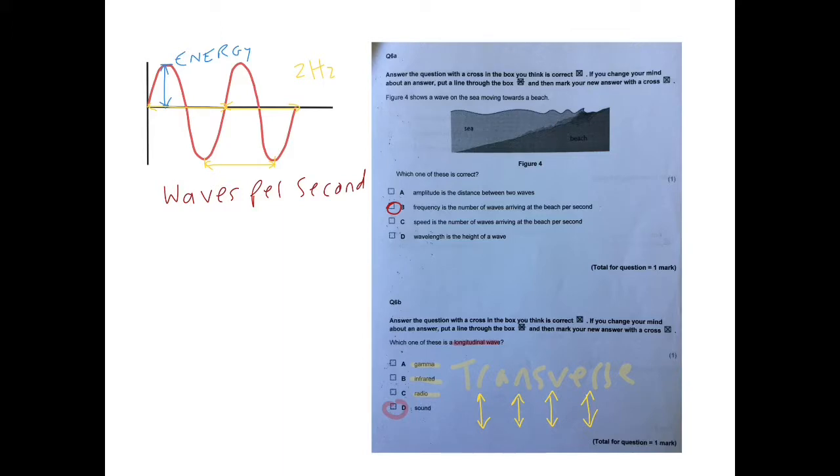What it means by transverse is as the energy travels forward, it causes particles to oscillate. That means vibrate at 90 degrees to the direction of energy flow. In other words, particles move up and down. Like a water wave. If you are standing in a stretch of water and a wave machine is switched on, you will bob up and down. You won't be thrown back.